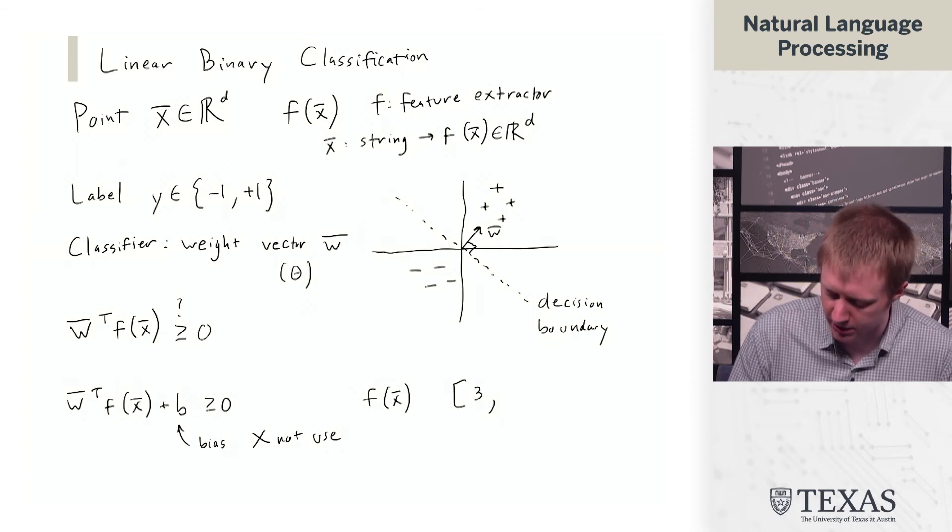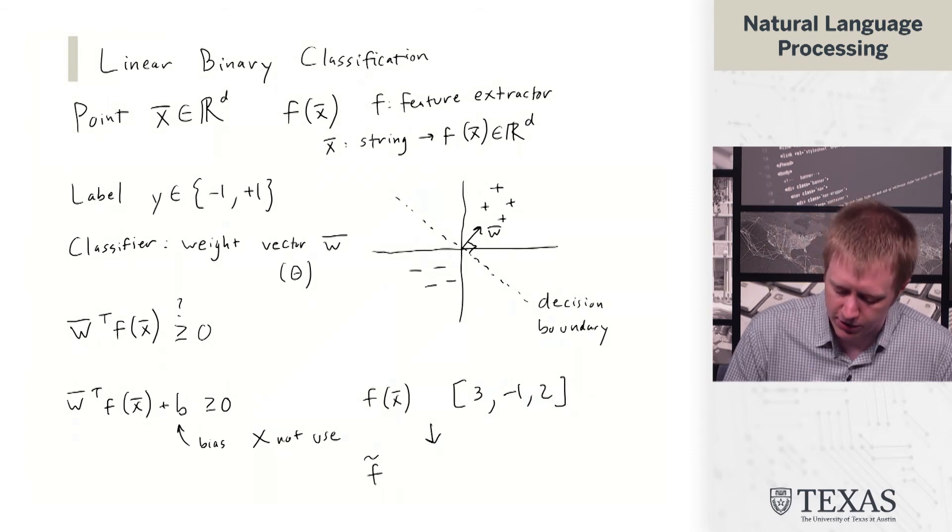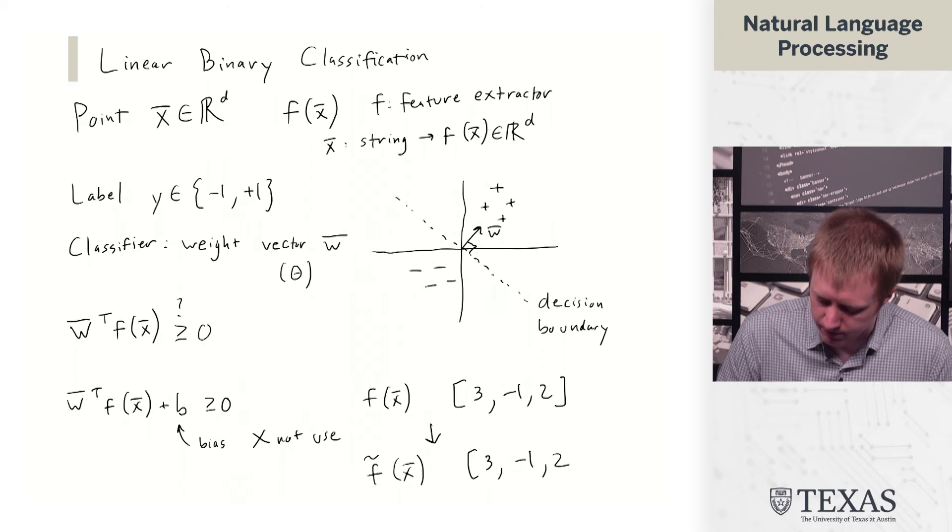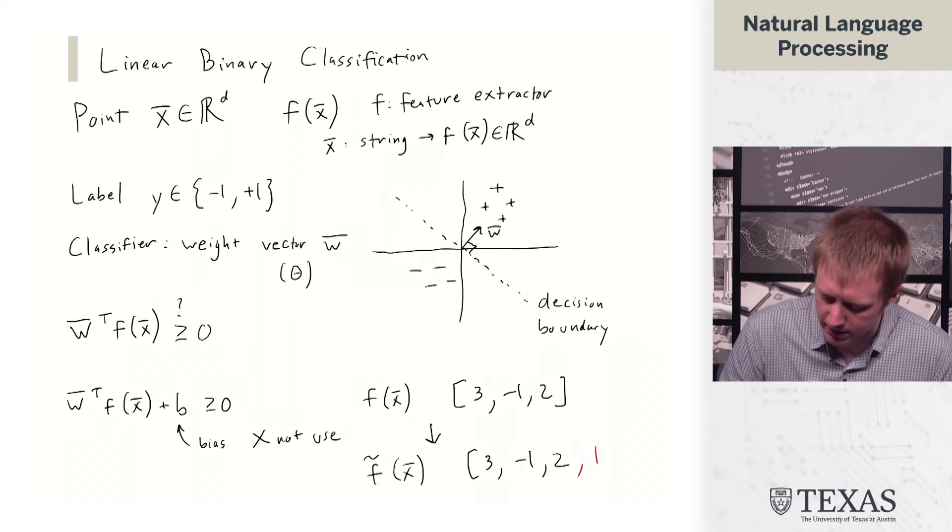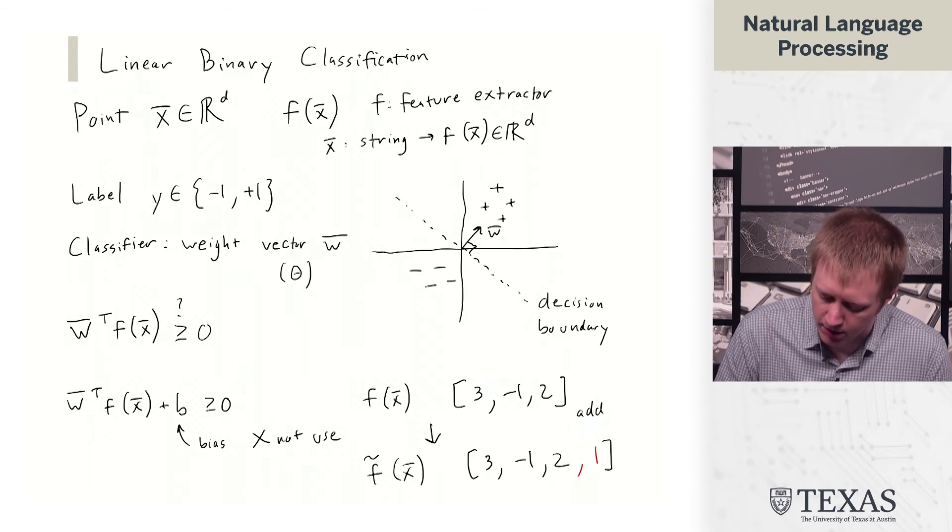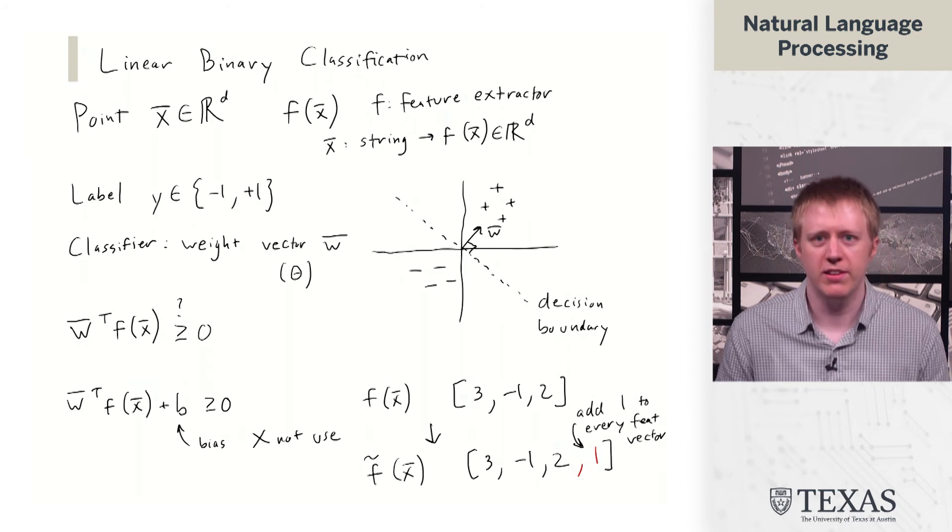let's say the features for a particular point are something like this. And we transform this into an f of x that has a 1 on the end of it.